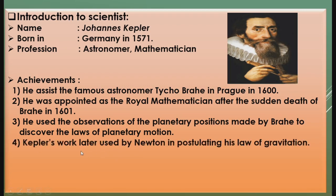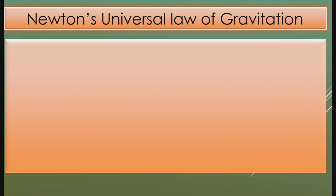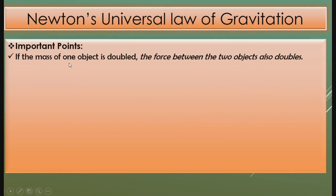Kepler's work was later used by Newton in postulating his law of gravitation. Now, if we know the universal law of gravitation, there are some important points. The first important point is: if the mass of one object is doubled, the force between the two objects also doubles.